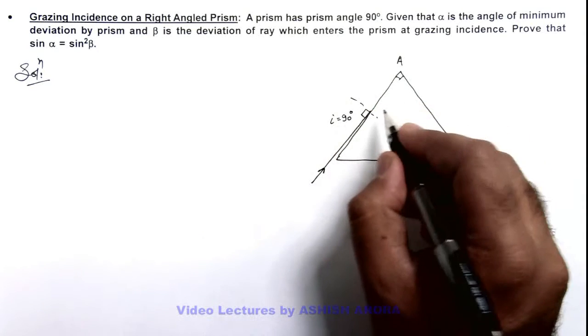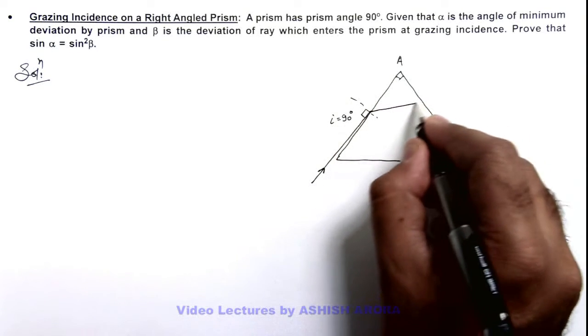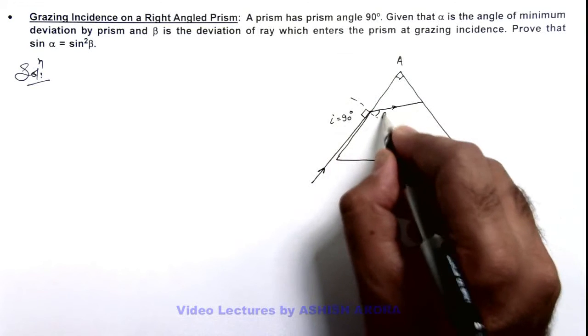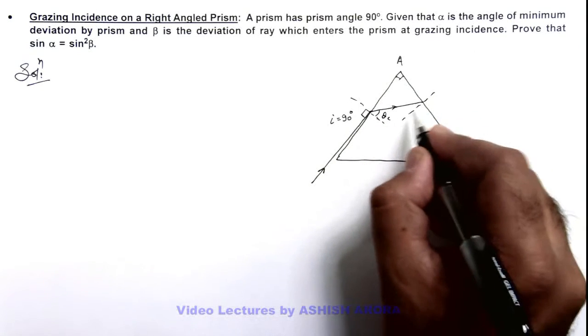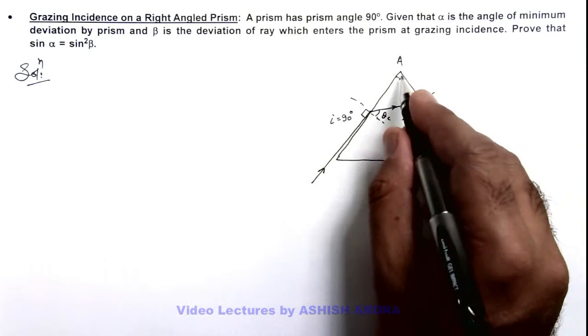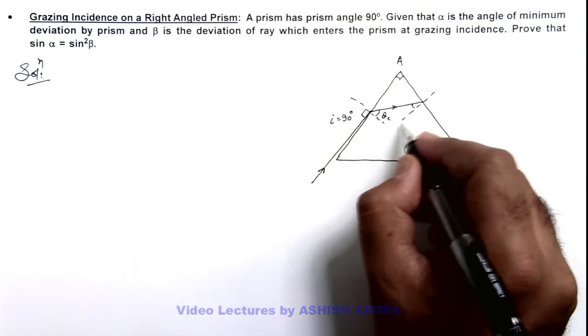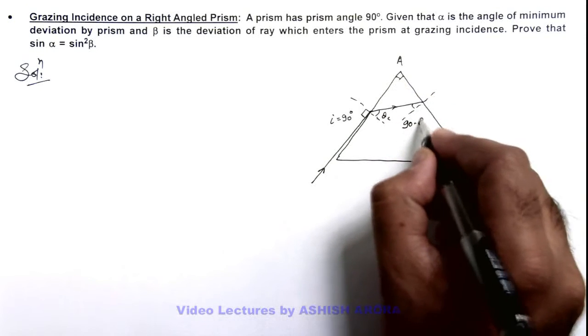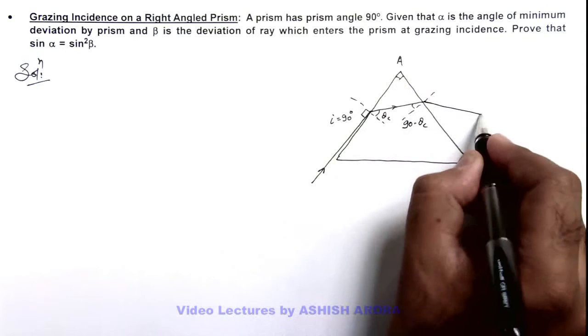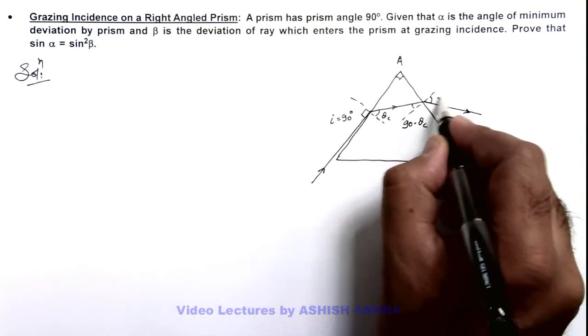So light enters the prism at an angle, critical angle theta c. On the other face the incidence angle will be A minus theta c, that will be 90 minus theta c, and finally light comes out at an angle of emergence e.